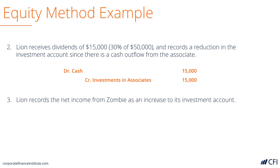The third step is that it records the net income from Zombie as its proportionate share into the investment account. So it debits investment in associates $30,000 and credits investment revenue $30,000.